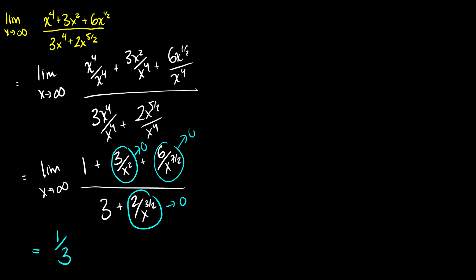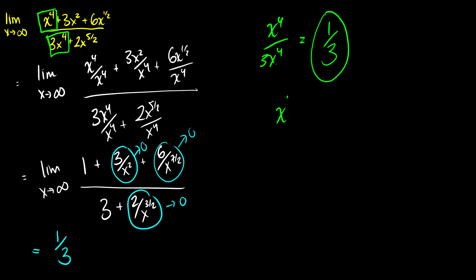The shortcut is to take the leading term in the numerator and the leading term in the denominator and divide them. Here we have x⁴ over 3x⁴, which gives 1/3 — that's our limit. If instead we had x⁴ over 3x⁵, we'd get 1 / (3x), which goes to 0 as x goes to infinity. Those are the shortcuts I'll use in the remaining questions.